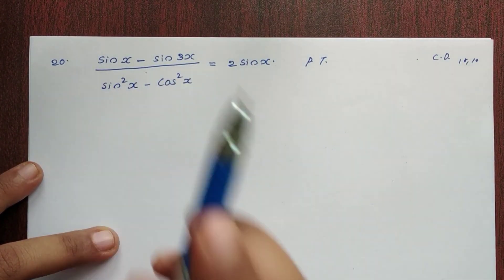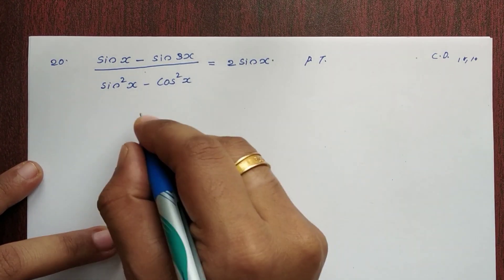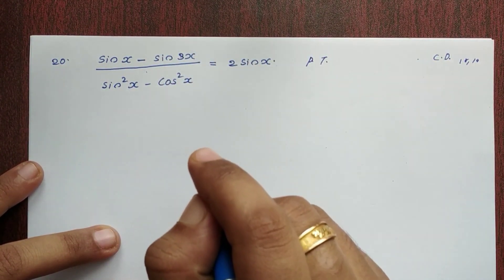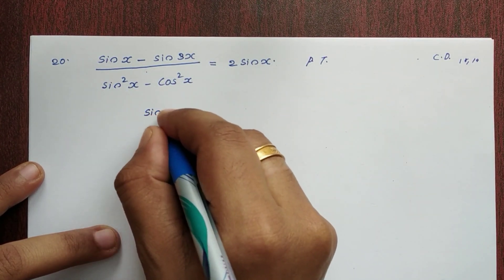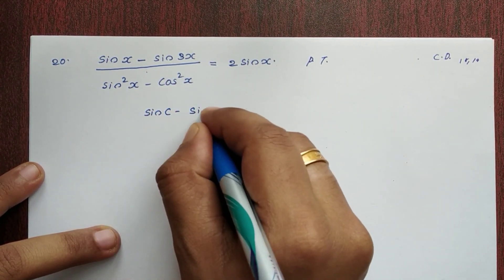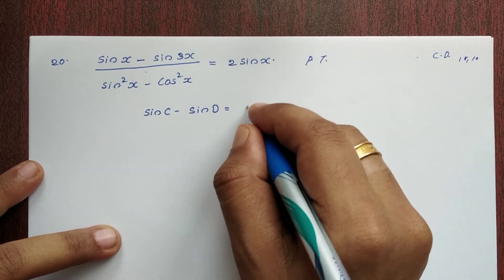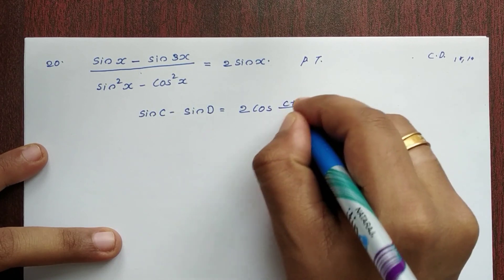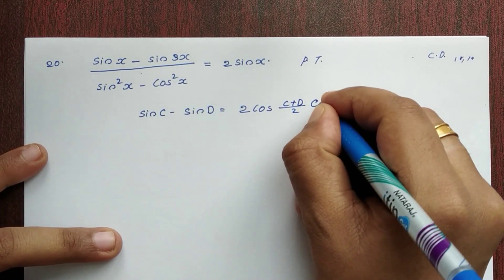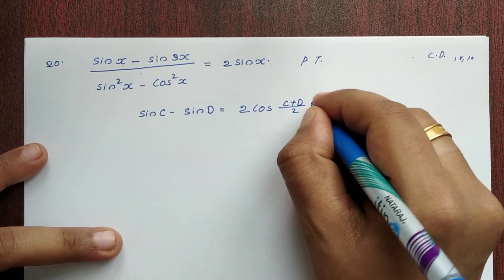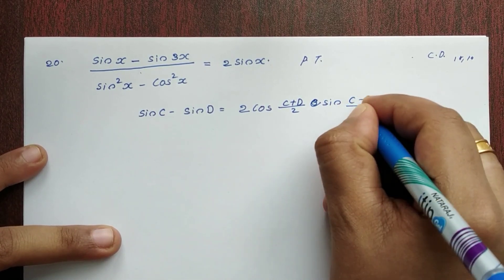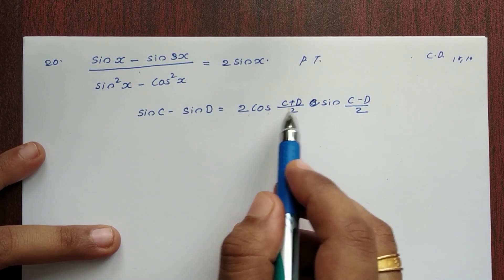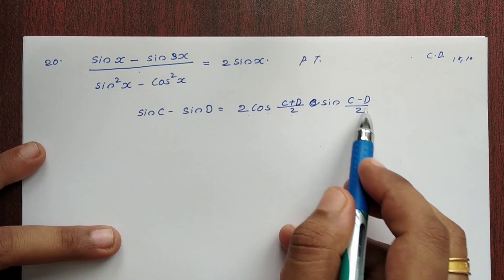What is this numerator? The numerator is of the form sin C minus sin D. So sin C minus sin D is equal to 2 cos((C+D)/2) into sin((C-D)/2).